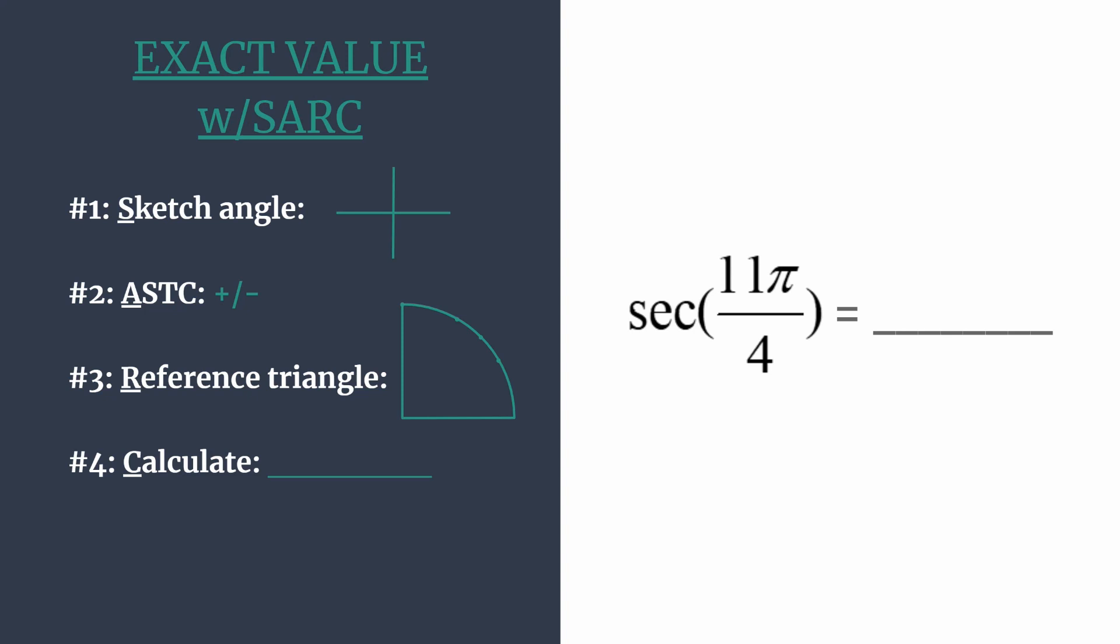Notice that 11π over 4 is actually more than one counterclockwise rotation. So we're going to subtract a full rotation, which is 2π, and that will help us better sketch, more accurately sketch, the terminal side. So let's first go ahead and find that coterminal angle.